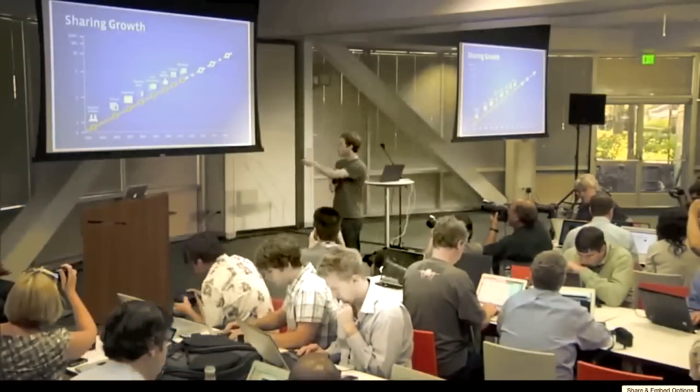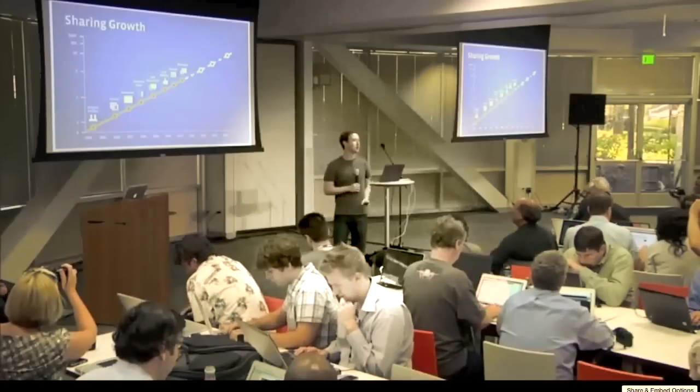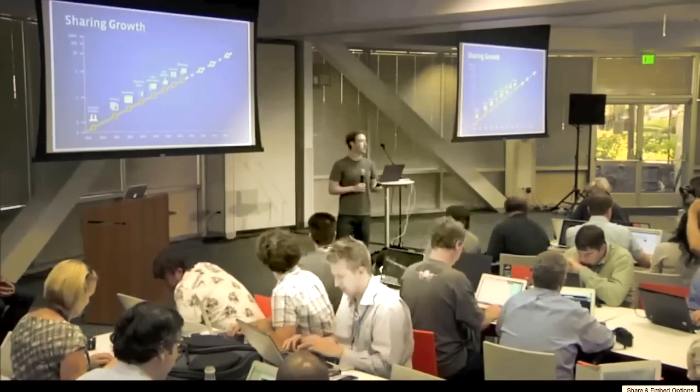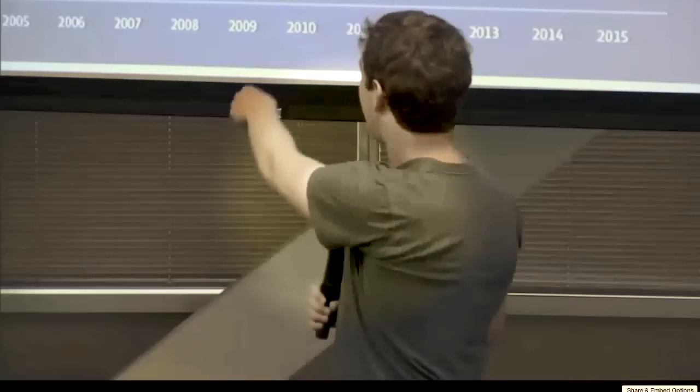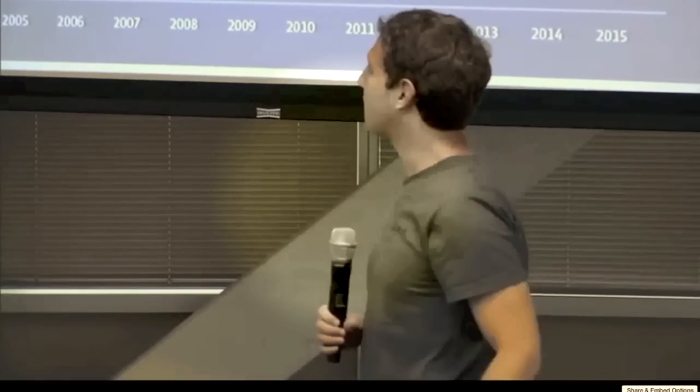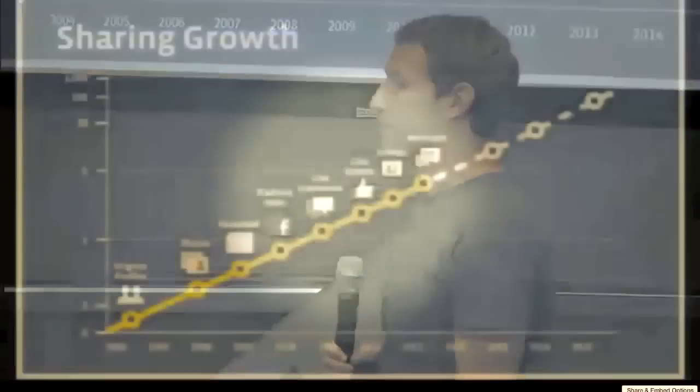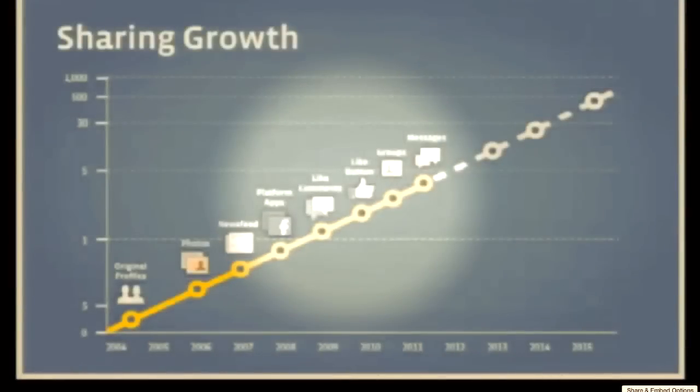And we believe that if you look at where the site started off, I don't know how many of you guys remember Facebook in 2004. There wasn't that much to do. You could update some interests on your profile. So not a surprise that the graph starts off with people sharing around 0.1 things a day on average. And then, as the site went on, we made it so people could share more stuff. There was this feedback loop—people wanted to share more stuff, which is why we built those products.